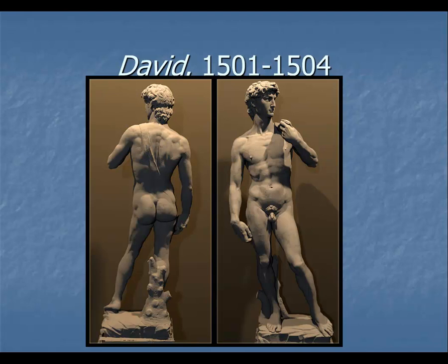Michelangelo was a prolific sculptor — reportedly, even as an old man, he could chisel more stone in a day than many sculptors combined. David is a statement of idealized Platonic beauty — the perfect male form — reflecting the Renaissance emphasis on capturing ideal beauty in art. It was placed outside the Palazzo Vecchio in Florence as a symbol of civic power, so anyone coming to city hall had to pass it as they entered.